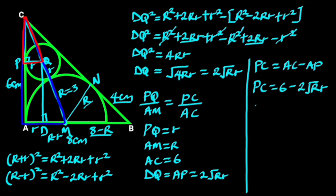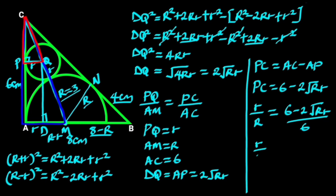Substituting these values in the above formula gives us r over R equals (6 minus 2√(Rr)) over 6. Let's recall that uppercase R, the radius of the semicircle, is 3. So substituting it with 3 gives us r over 3 equals (6 minus 2√(Rr)) over 6.